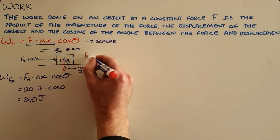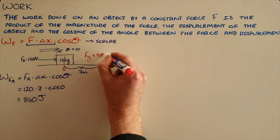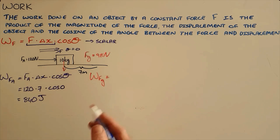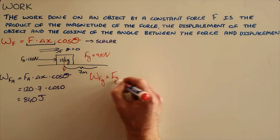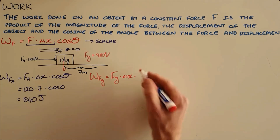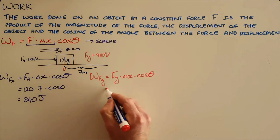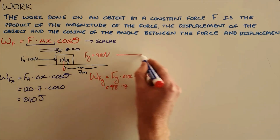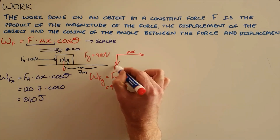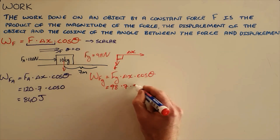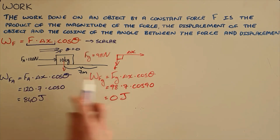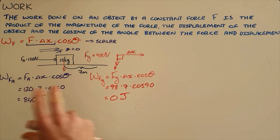While this is happening, there is also a force of gravity of 98 newtons pulling the object downward. To demonstrate that gravity does no work here: the work done by gravity equals 98 newtons times 7 meters times cosine of the angle between them. The displacement is to the right but the force is downward, making the angle 90 degrees. Cosine of 90 is zero, so the work done by gravity is zero joules — gravity does no work on this object.